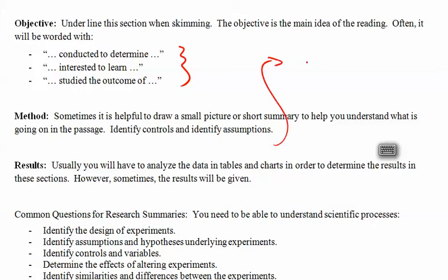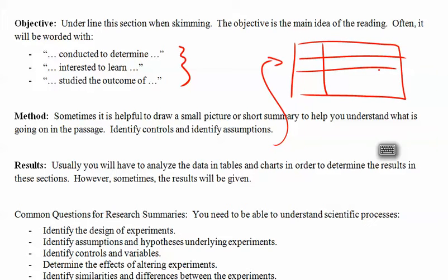They'll put a chart, and often the first column is a label. A lot of people are taught that's the independent variable. Might be. More likely it's a label, experiments A, B, C, and D. Then you've got independent variable here and dependent variable here.